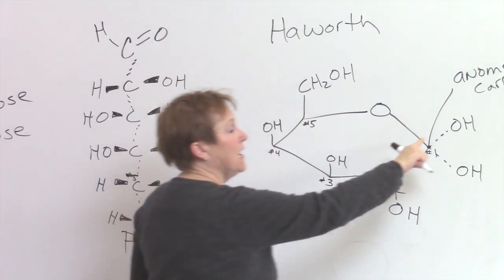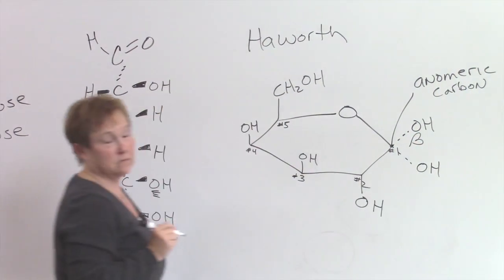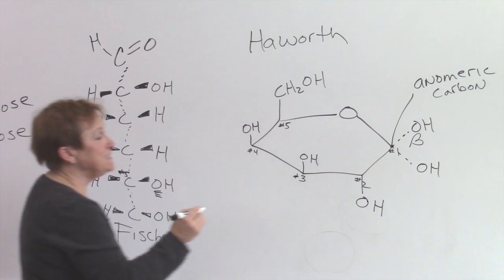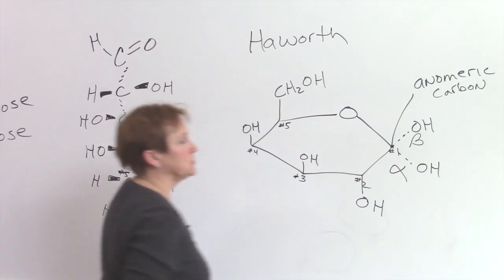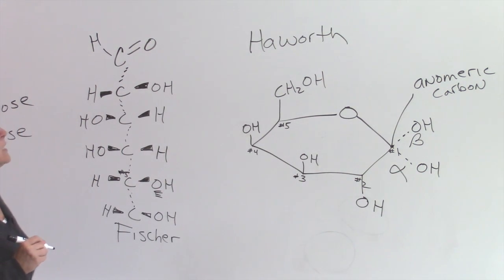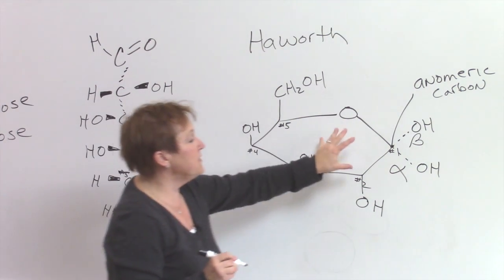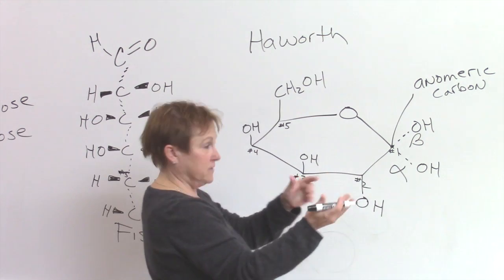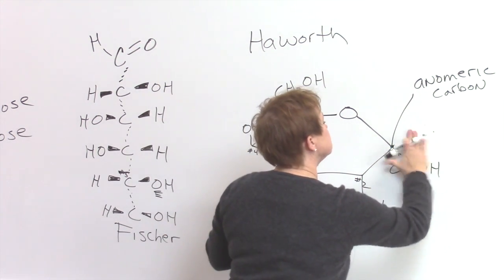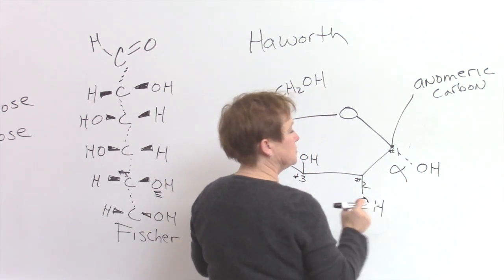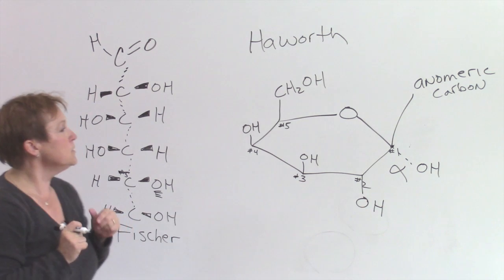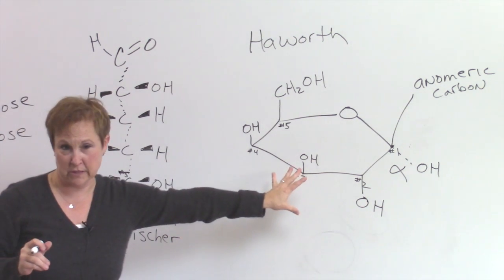If it points up it's a beta sugar, if it points down it's an alpha sugar. You have to be told draw the alpha form or draw the beta form. So if I said draw the alpha form, I would erase this and this would just be a hydrogen right here. That's how we go from the Fisher projection to a Haworth projection.